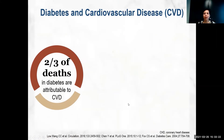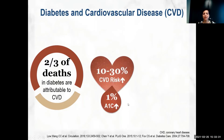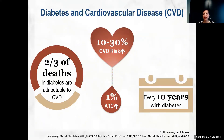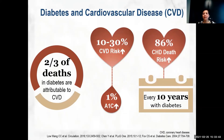So what is the problem with diabetes? Why is everybody so worked up about it? Well, two-thirds of diabetics will die of cardiovascular disease. Diabetes, measured by hemoglobin A1c, increases your risk of cardiovascular disease by 10 to 30 percent, and for every 10 years with diabetes you have an 86 percent increased risk of having a cardiac death.